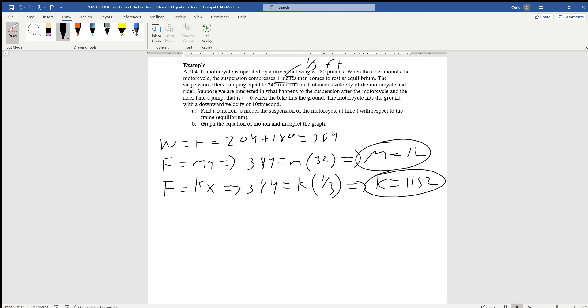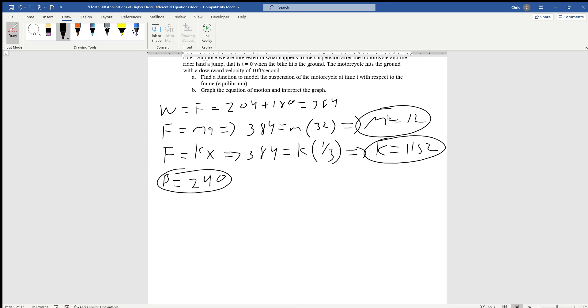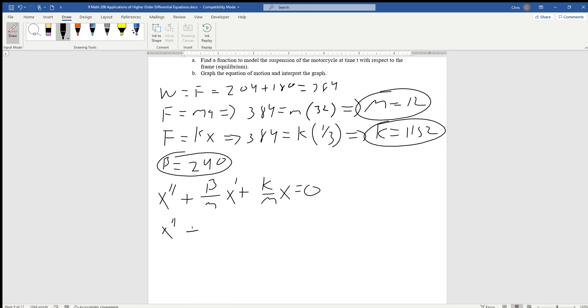The only other variable we need is the damping constant or damping factor, which is 240 as given. Now we can set everything up into our second order differential. Remember, we have x double prime plus beta over m times x prime plus k over m times x equals 0. We just substitute everything. Beta is 240 over 12, and k is 1152 over 12.